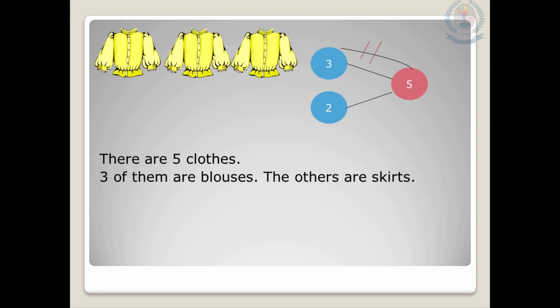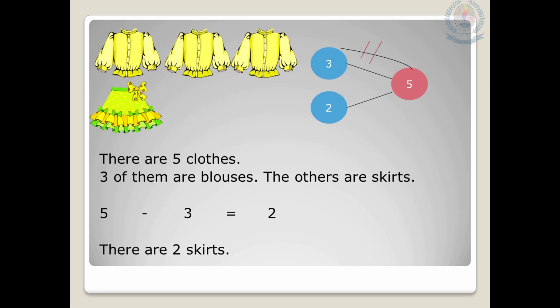So we can write not an addition sentence but a number sentence. The number sentence is five minus three equals two. From five you deduct three, so the answer is two. Understood? So how many skirts are there? There are two skirts. Out of five clothes, you have three blouses and two skirts.